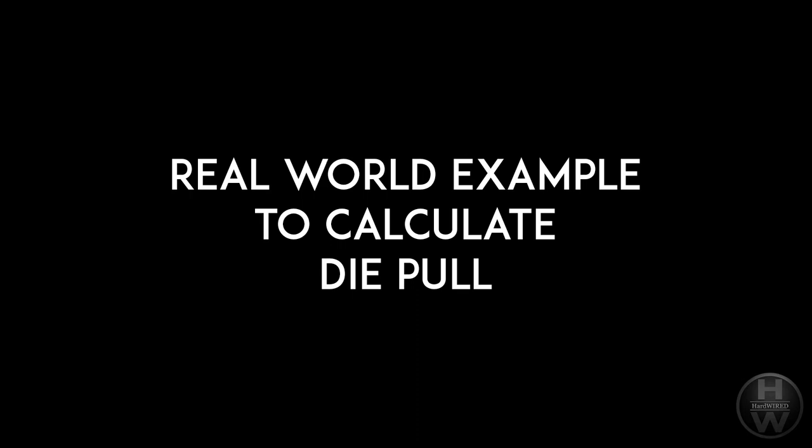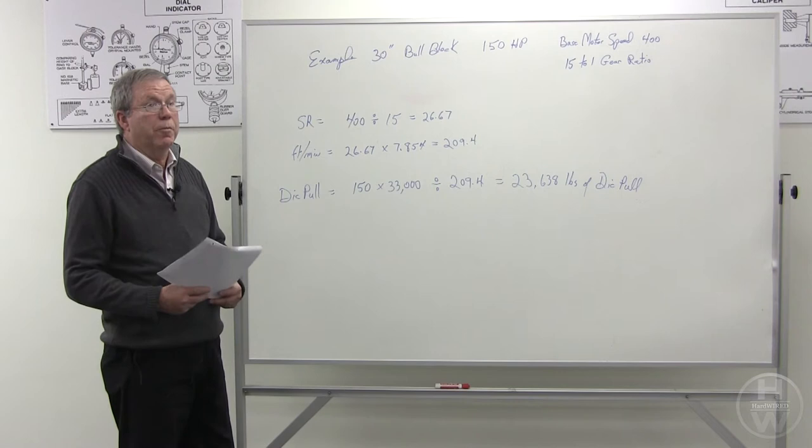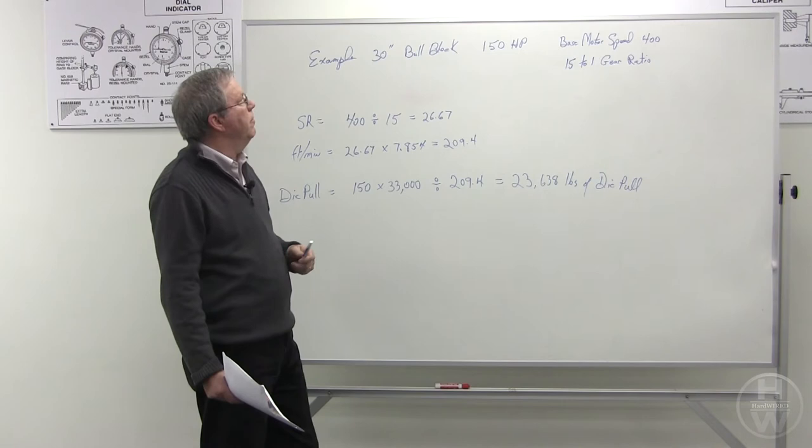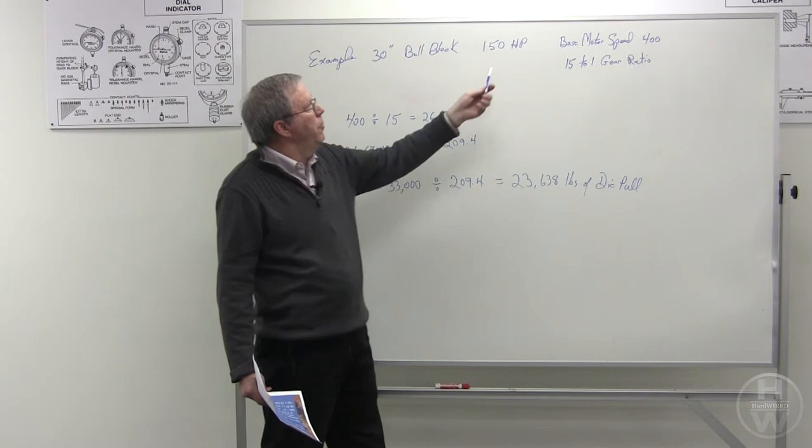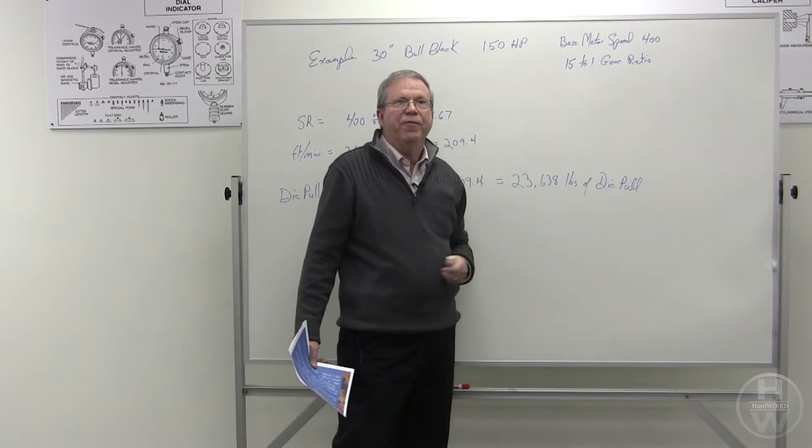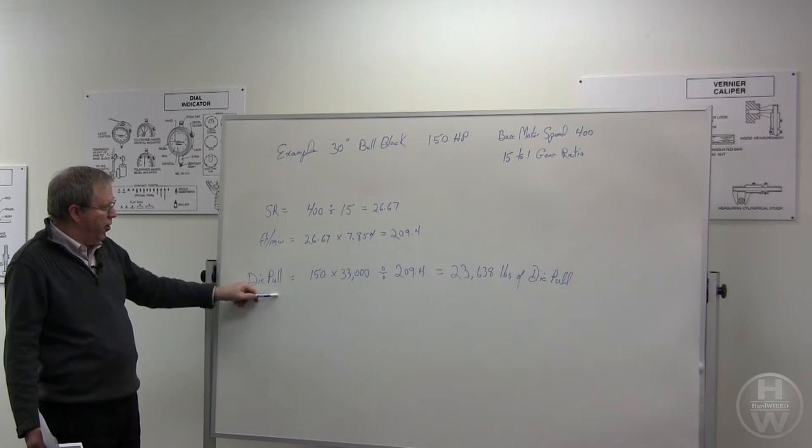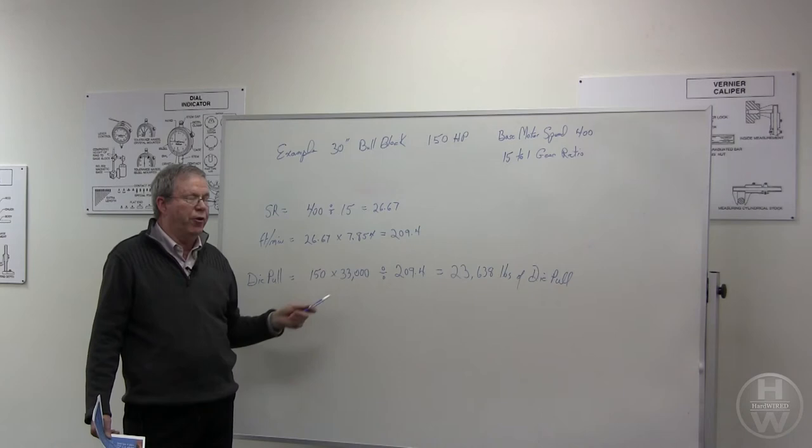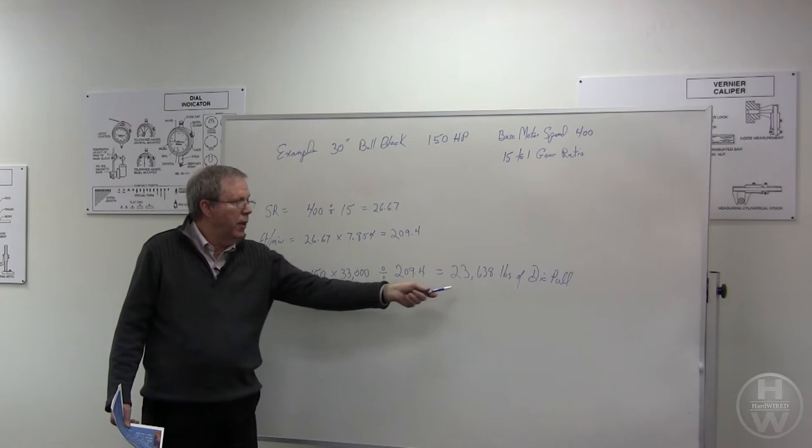So the following is an example of the equation we just talked about. Let's say we have a bull block that has a 30-inch block on it. It has a motor rated at 150 horsepower, and the motor base speed is 400 feet per minute, and it has a gear ratio of 15 to 1. We can then, working on our die pull equation, use 150 horsepower times 33,000 divided by feet per minute and we come up with our die pull.